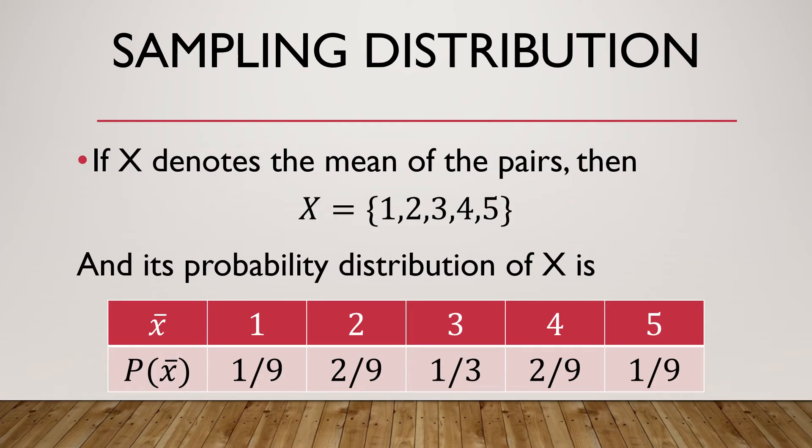If X denotes the mean of the pairs, then the random variable X contains {1, 2, 3, 4, 5}, and these are the means of the pairs that we obtain when we draw two numbers from 1, 3, and 5.